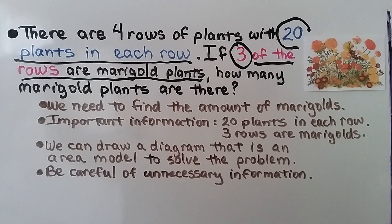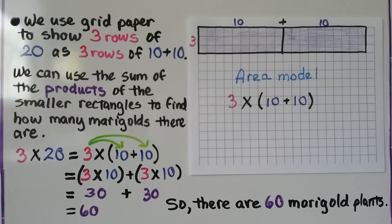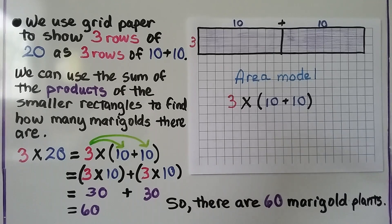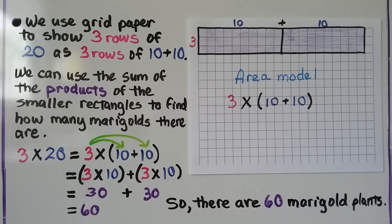Many times word problems have unnecessary information. You might have to read the problem once or twice to fully understand what the important information is. What's important here is that three rows are marigolds and there are 20 in each row. The distributive property says multiplying a sum by a number is the same as multiplying the addends by the number — we're going to get the same product.